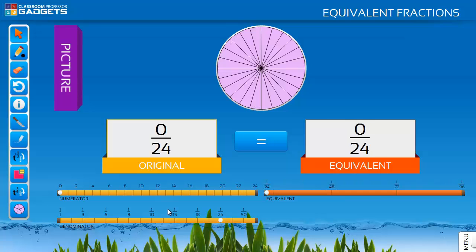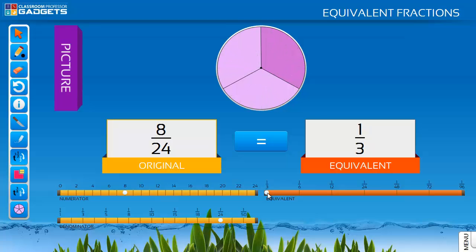To simplify a fraction, enter a larger fraction, say eight twenty-fourths, and then simplify it by choosing a fraction that has a smaller denominator. The software shows all factors and multiples of the original fraction from its lowest common factor up to hundredths.